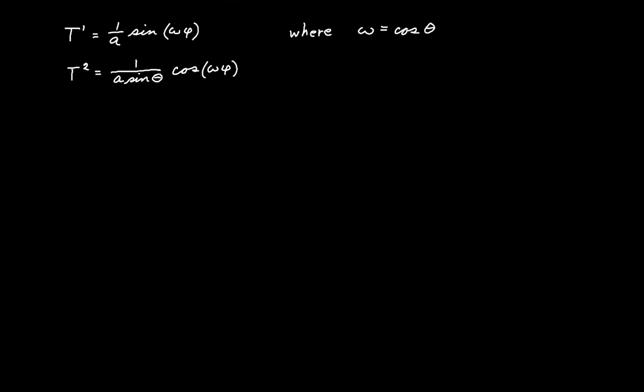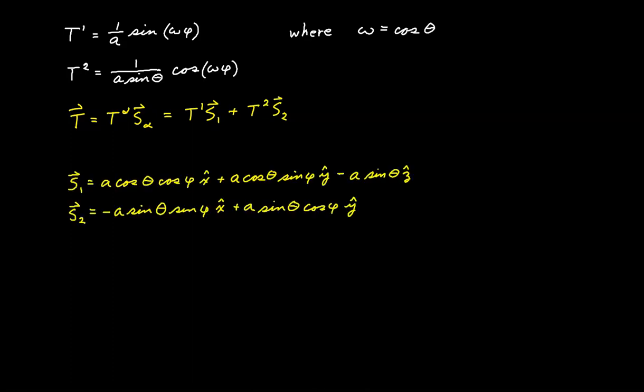The final step is to form a linear combination. Our vector T is going to be equal to the contraction of T alpha with the surface basis vectors S alpha. Well, of course, that expands out this way. It's T1 times basis vector S1 plus T2 times basis vector S2.